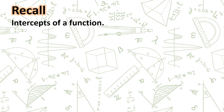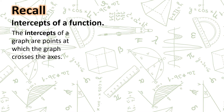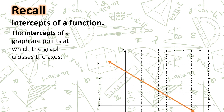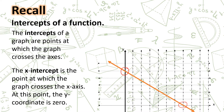The intercepts of a graph representing functions are points at which the graph crosses the axis. For example, for this linear function, the intercepts are those points where the line crosses the y-axis and the x-axis. The x-intercept is the point at which the graph crosses the x-axis. At this point, the y-coordinate is zero. Hence, at the x-intercept, the coordinates are (a, 0), where a is any real number.